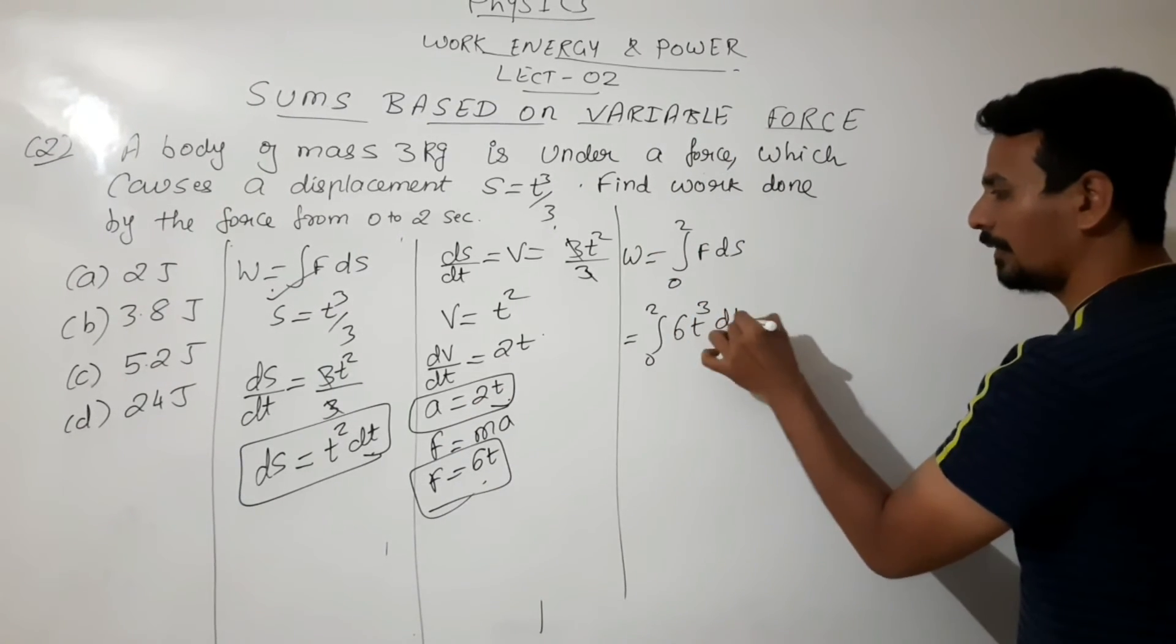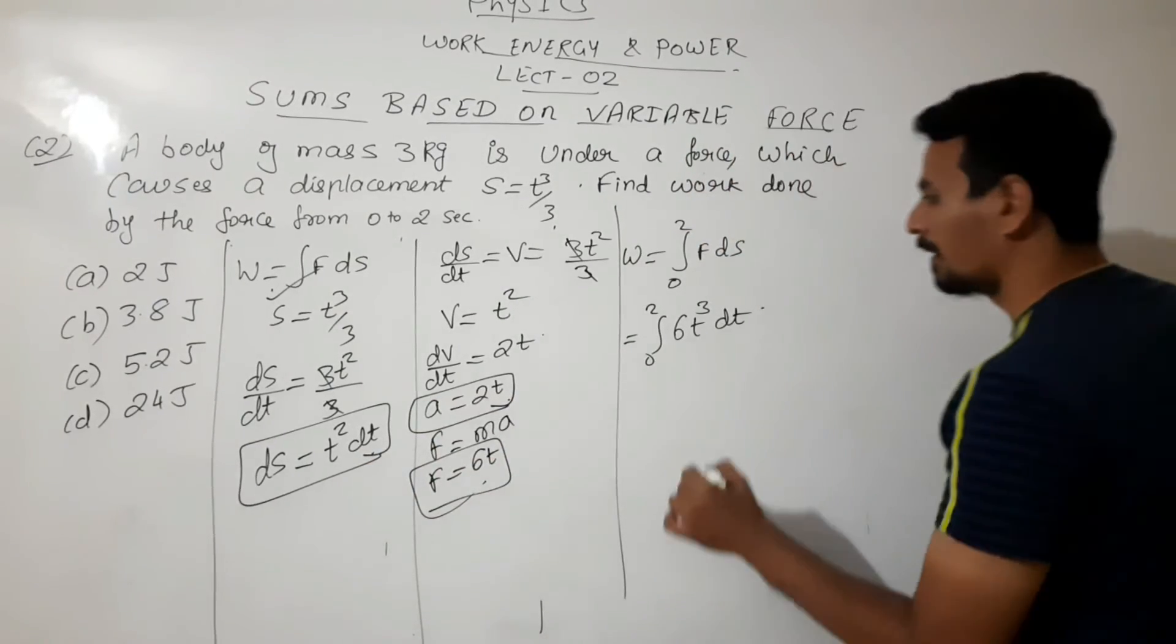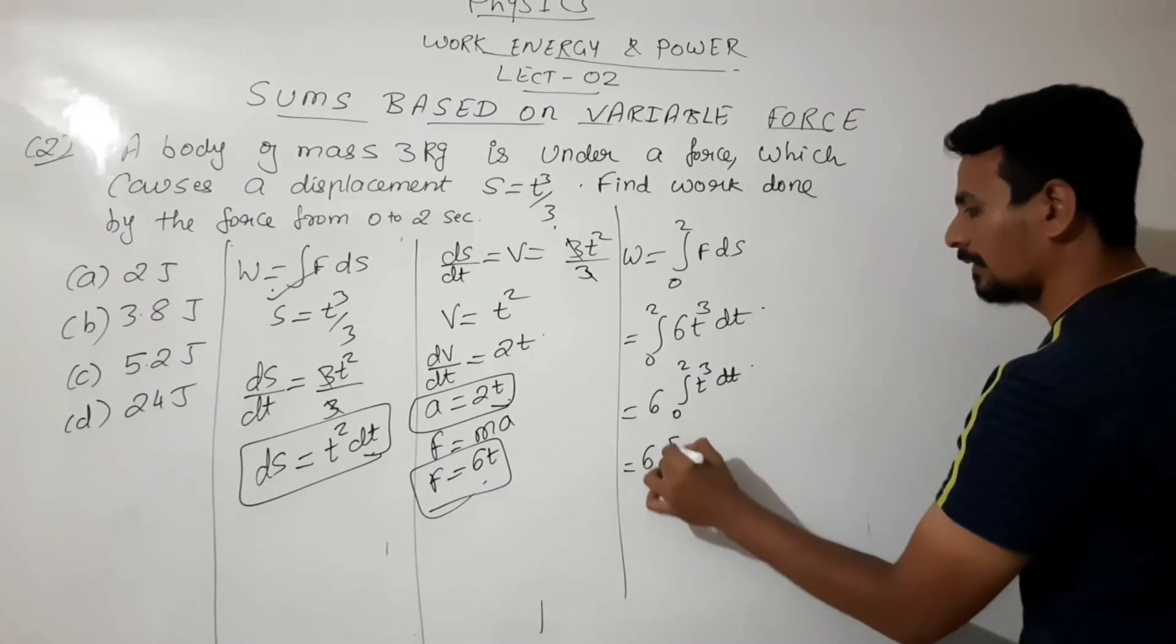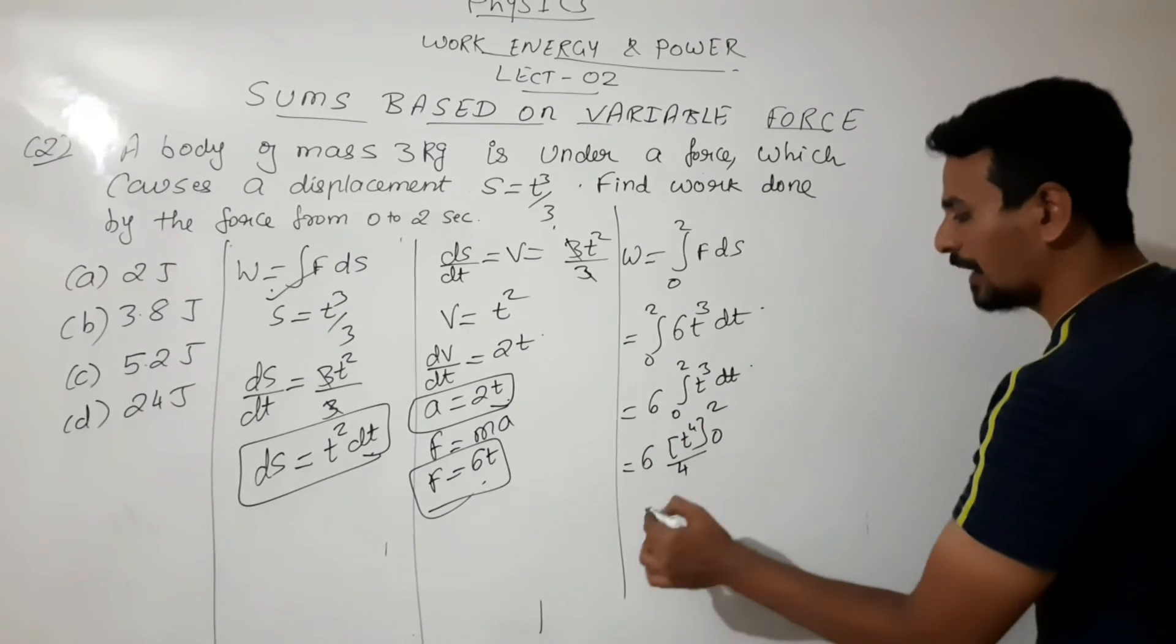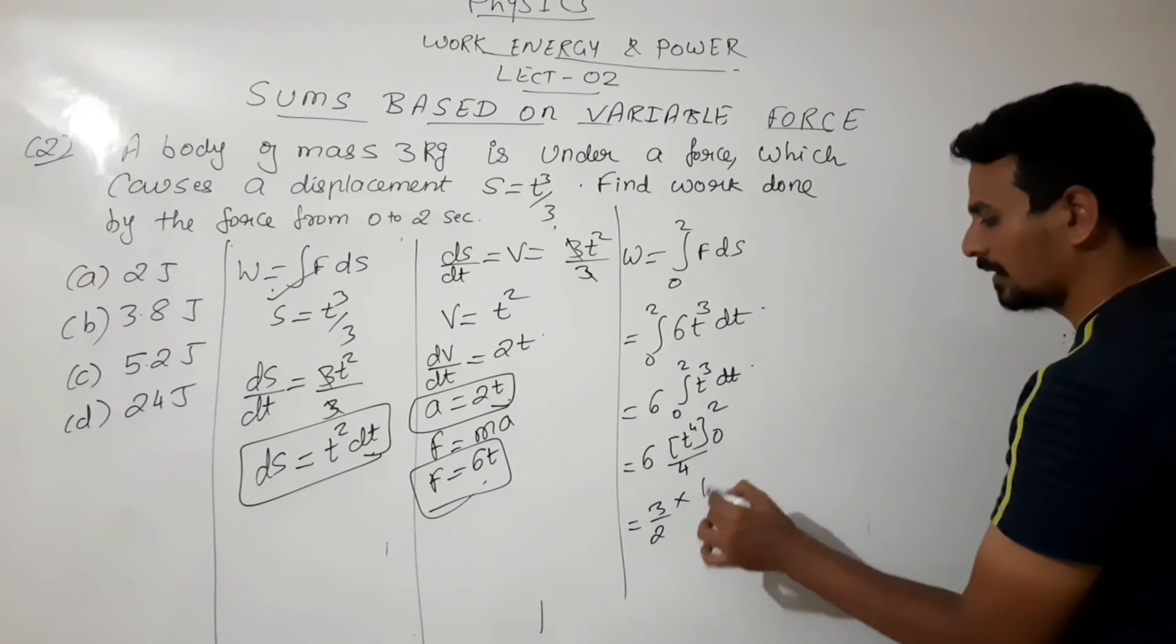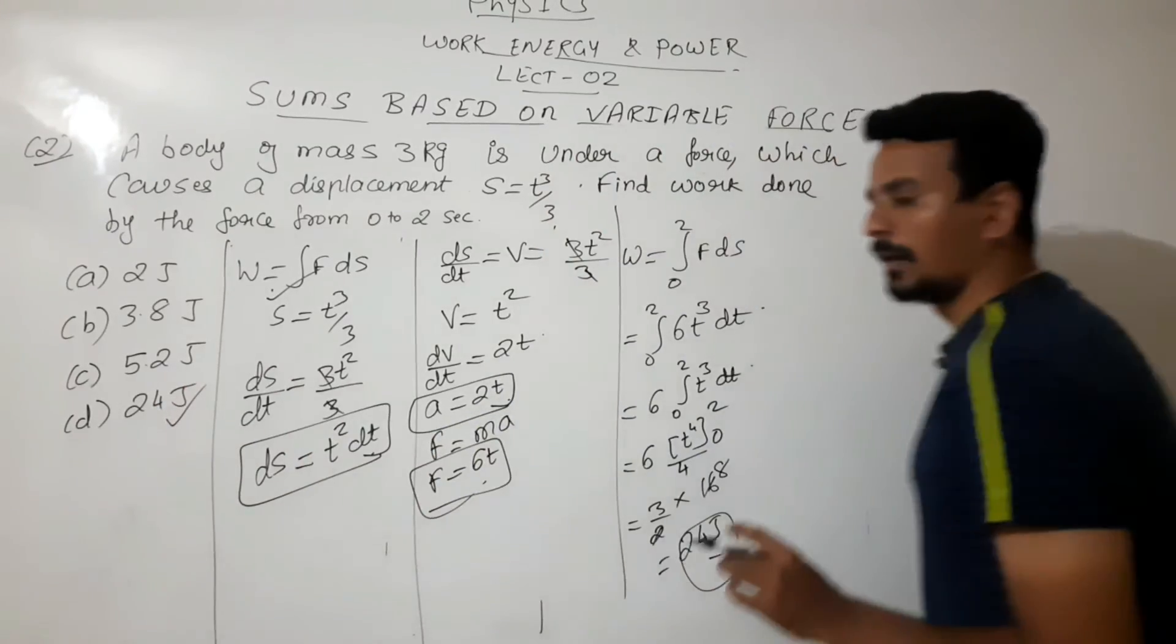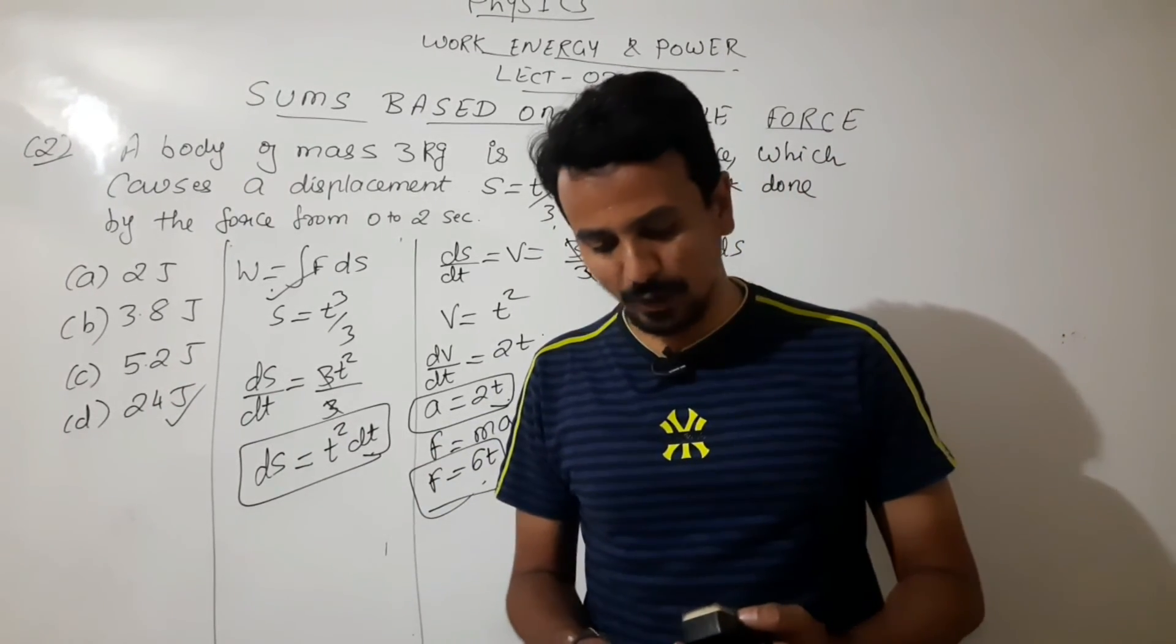Integration 0 to 2 of 6t³ dt. t³ dt will be t⁴/4. 6/4 is 3/2 into 16, so your answer is 24. This is your option. Got it? So this is how we will solve the questions based on variable force.